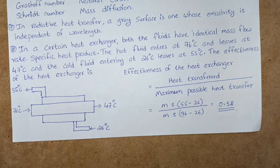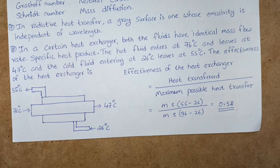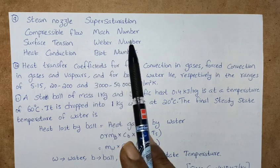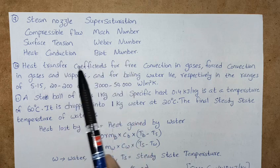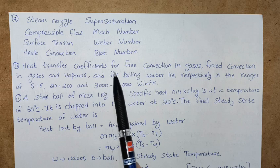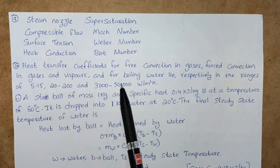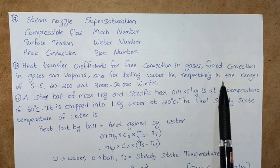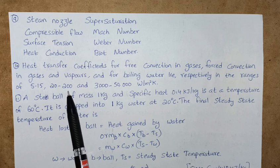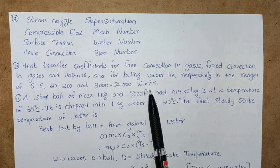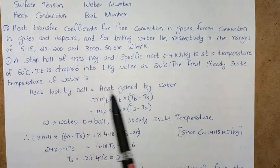So problems—definitely you will get problems for AE as well as AWE, small problems, two marks problems you will get, so definitely you have to practice. We will continue: steam nozzle is for super saturation, compressible flow is for Mach number, surface tension is for Weber number, and heat conduction is for Biot number. Heat transfer coefficients for free convection in gases, forced convection in gases and vapors, and for boiling water lie respectively in the ranges of 5 to 15, 20 to 200, and 3000 to 50,000 watt per square meter kelvin.